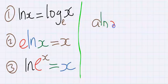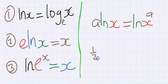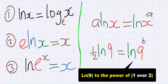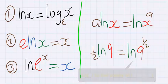Similarly, a·ln x is equal to ln(x^a). This means if I have 1/2·ln 9, my answer will be ln(9^(1/2)). This is the same as writing ln(√9).